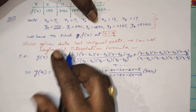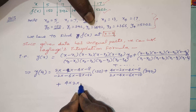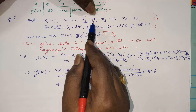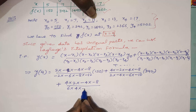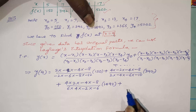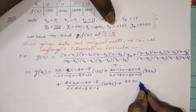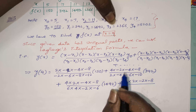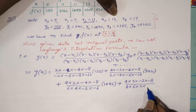For the third term, skip x2 equals 11: numerator is 9 minus 5 equals 4, 9 minus 7 equals 2, 9 minus 13 equals minus 4, 9 minus 17 equals minus 8; denominator: 11 minus 5 equals 6, 11 minus 7 equals 4, 11 minus 13 equals minus 2, 11 minus 17 equals minus 6; times y2 equals 1492. For the fourth term, skip x3 equals 13: denominator uses 13 minus 5 equals 8, 13 minus 7 equals 6, 13 minus 11 equals 2, 13 minus 17 equals minus 4.